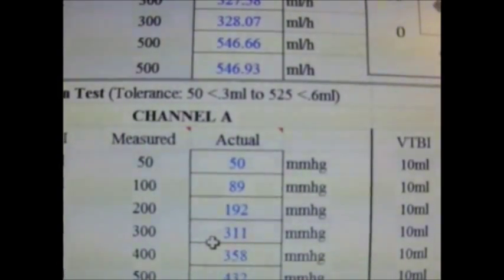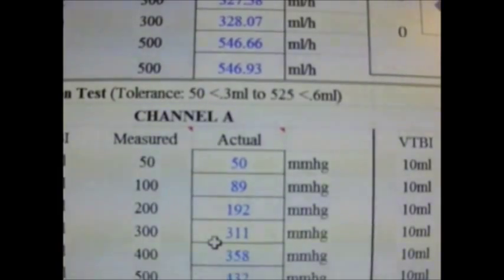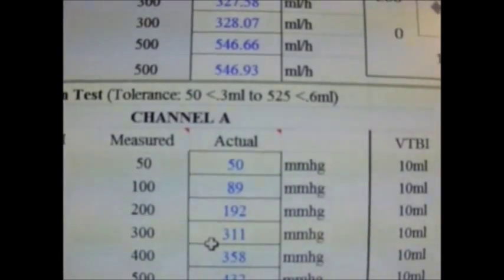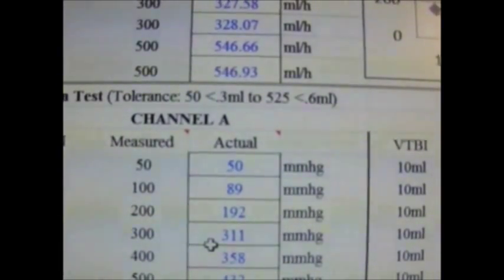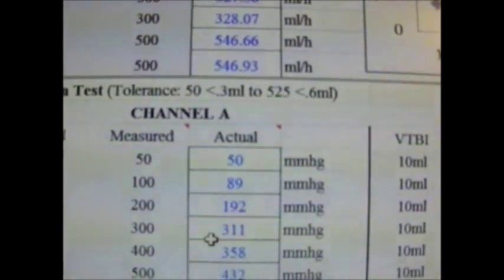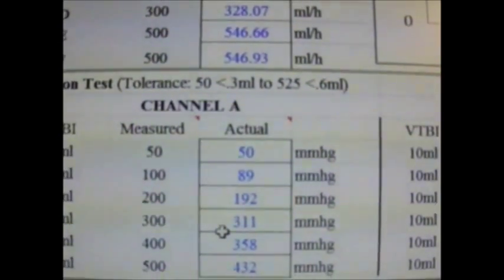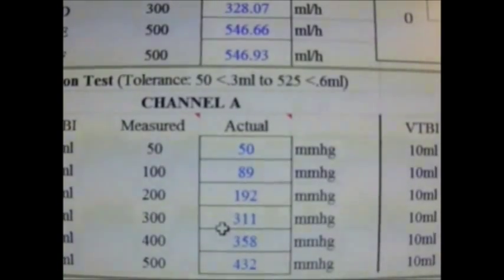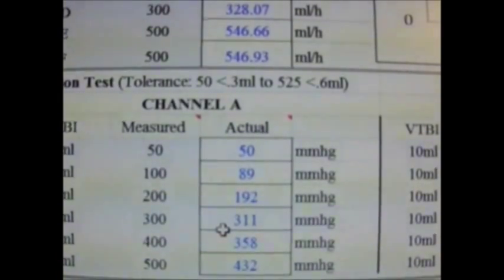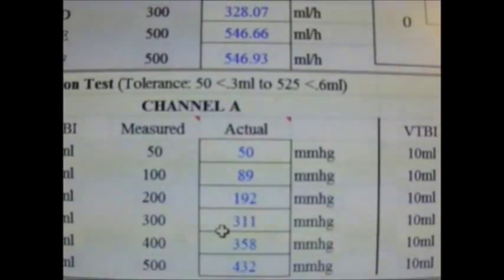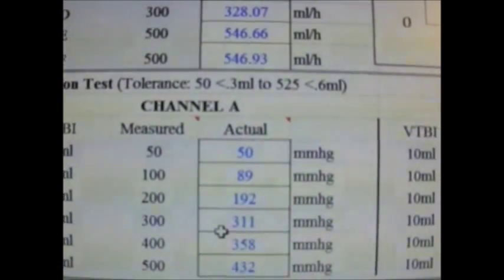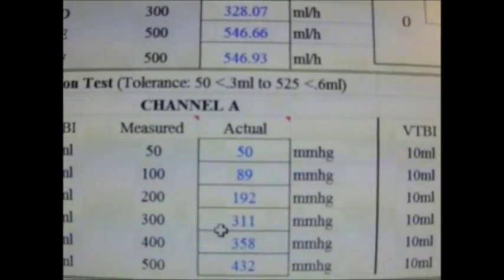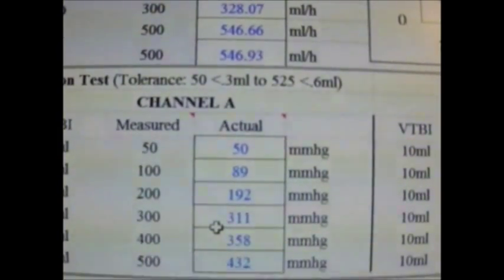Occlusion is measured in pounds per square inch, PSI, or millimeters of mercury, mmHg. The conversion ratio is 1 mmHg equals 0.019334 PSI.